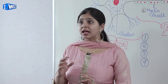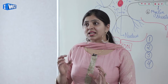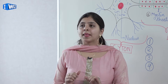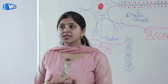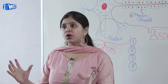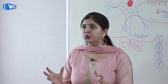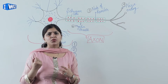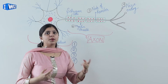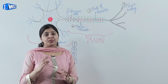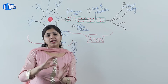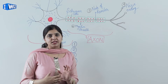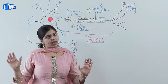Control and Coordination are basically provided by nervous tissues and muscle tissue. Now we are going to talk about the nervous system. The nervous system is made up of an organized network of some nerve cells, which we call neurons. Neurons are basically specialized for conducting information through electrical impulses from one part of the body to another part.